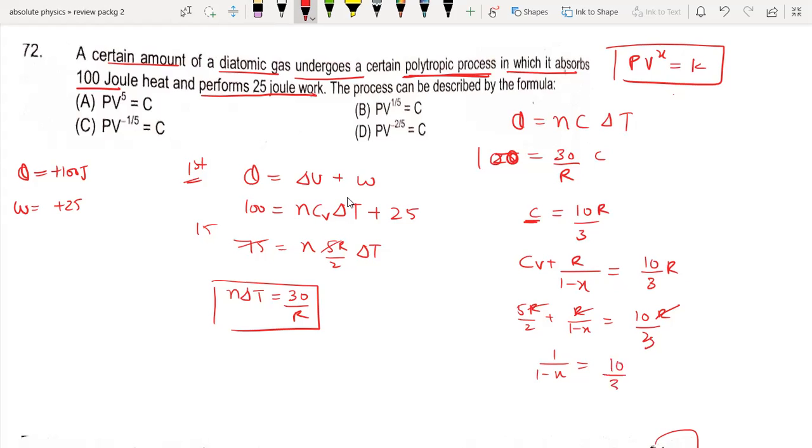This is 10/3 minus 5/2, which equals 20/6 minus 15/6, so 5/6. Therefore 6 equals 5 minus 5x, which gives 5x equals minus 1, so x equals minus 1/5. The answer is minus 1/5, which you can see is option B. Thank you.